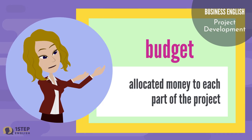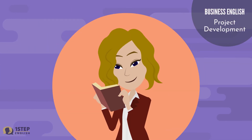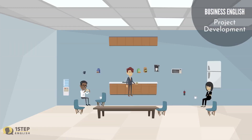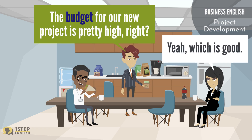Budget. It refers to allocated money to each part of the project. Here's an example: 'The budget for our new project is pretty high, right?' 'Yeah, which is good.'